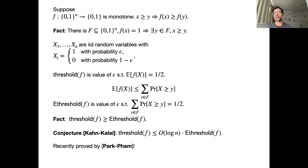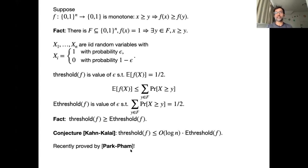This log n factor is the correct ratio for the perfect matching example — the threshold is log n / n while the expectation threshold is roughly 1/n. Very recently, just in the last 10 or 15 days, Park and Pham actually proved this conjecture. Their proof doesn't directly use sunflowers, but it uses many of the ideas developed in trying to understand the sunflower lemma.